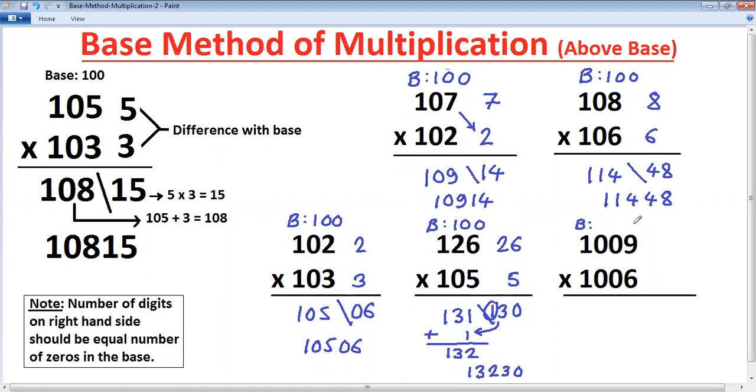Next example. Note that here base is 1,000. Both these numbers are near to 1,000. 1,009, 1,006. So difference. 1,009 minus 1,000 is 9. 1,006 minus 1,000 is 6. Just remove 1 to get the difference. 9, 6 are 54. 9 into 6 is 54. But base here is 1,000 three zeros. So three digits are required as we have discussed here. 1,009 plus 6 is 1,015. Join. And that is the final answer.